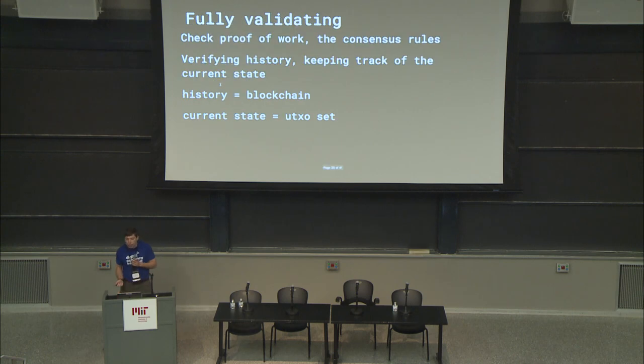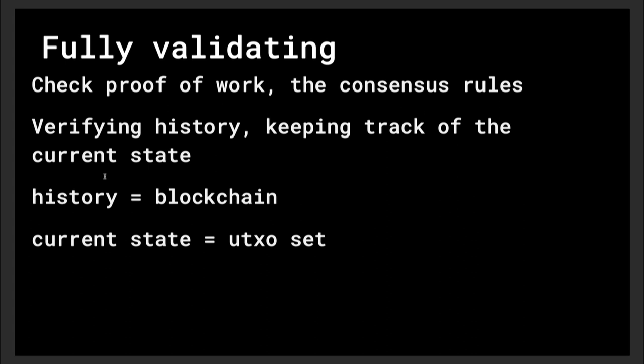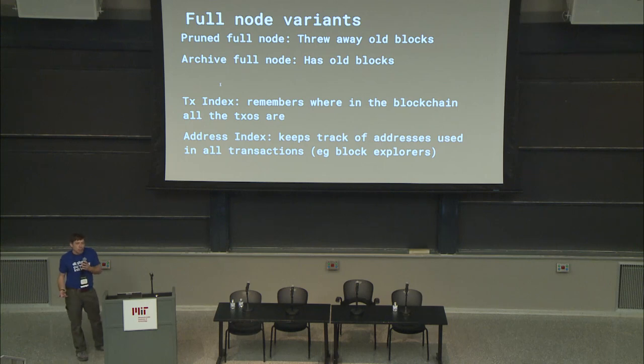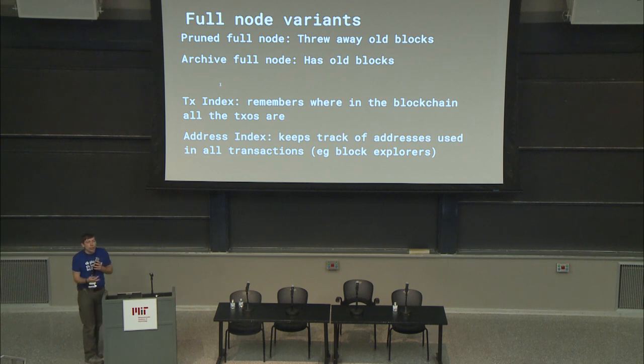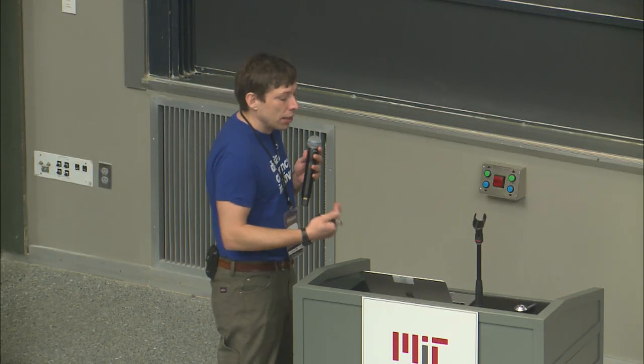The main thing a full node does is it's fully validating: it checks the proof of work, checks all the consensus rules, verifies the whole history, and keeps track of the current state — the UTXO set. There are variants: a pruned full node where you validated all the old blocks but threw them away, so you can't serve them to others, but you know for yourself the correct state. Or an archive full node where you have all the history and can convince anyone else by giving them all the data.